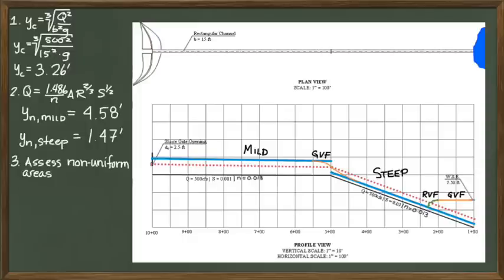When the slope transitions from mild to steep, we should expect to see a GVF profile in the mild and steep sections. We assume that the flow will pass through the critical depth at the grade break.